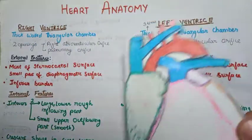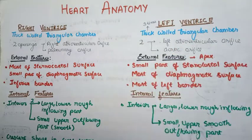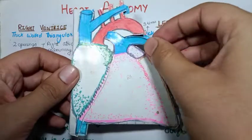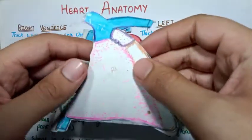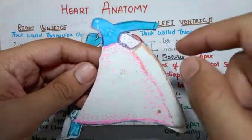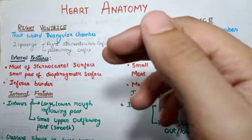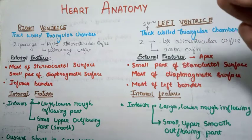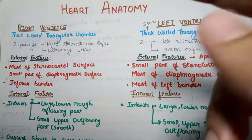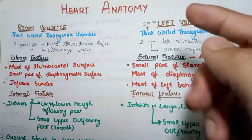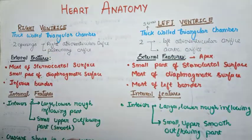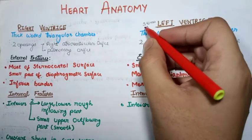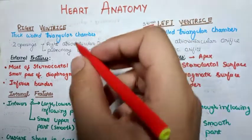The right ventricle is a triangular chamber, as you can see in this model. It is a thick-walled triangular chamber with two openings. Similarly, the left ventricle is also a thick-walled triangular chamber with two openings, but the thickness of the left ventricle is three times that of the right ventricle. This is a notable point — the left ventricle is three times as thick as the right ventricle.